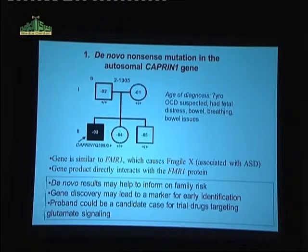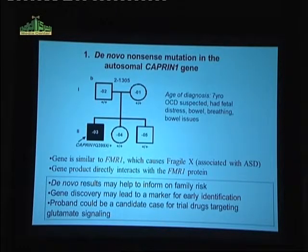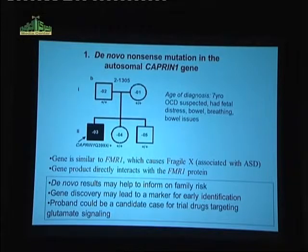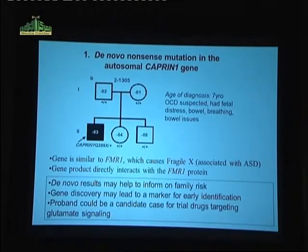Had we known about this earlier, if there were questions about family counseling, the likelihood of the second and third child would have returned back to population average because it's a de novo mutation. The gene discovery may lead to a marker for early identification. The child could have been monitored much earlier and become a candidate for drug trials targeting glutamate signaling because of the pathway involved.